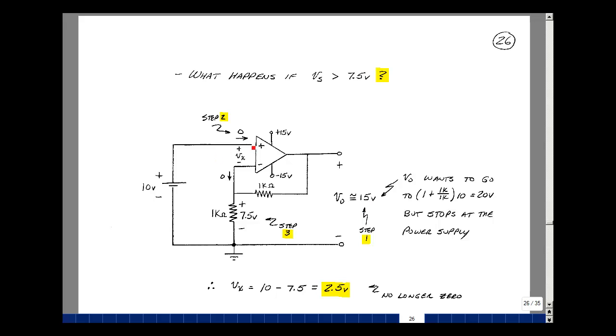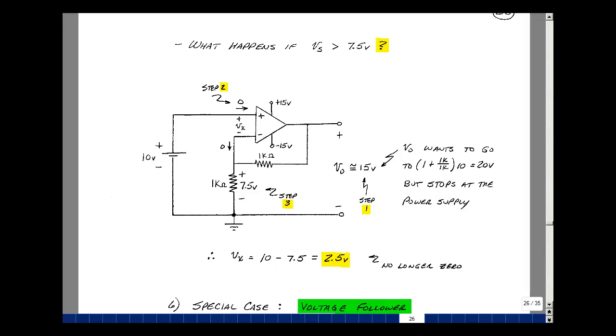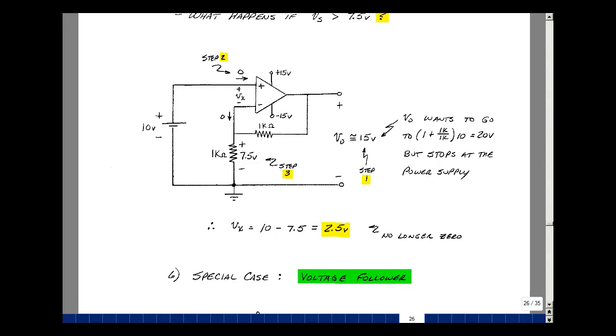We call that clipping. There's also no current entering and leaving the op-amp because it's still a high resistance. Current in the 1k here is the same as the current in this 1k. We've got the conditions for voltage divider. So if there's 15 volts here, there'll be 7.5 volts here. Now, if there's 7.5 volts here and 10 volts here, that means the voltage across here is 2.5 volts. In other words, 2.5 plus 7.5 is 10. We no longer have the no voltage across the op-amp. So if we try to increase the output greater than the power supply, it just simply stops there.